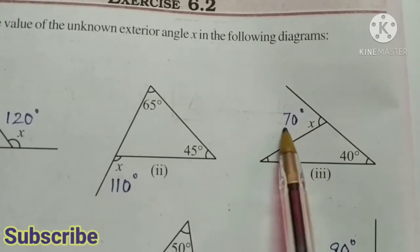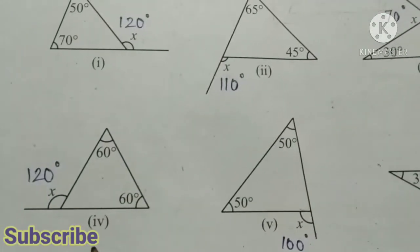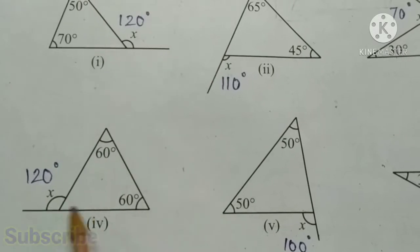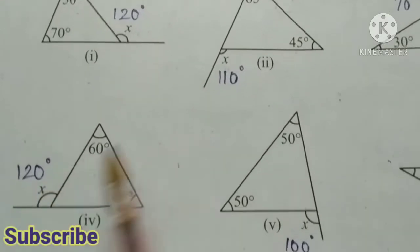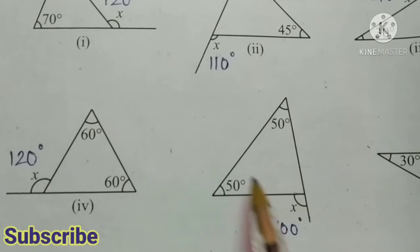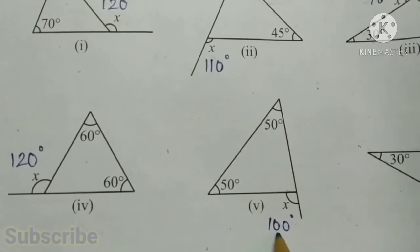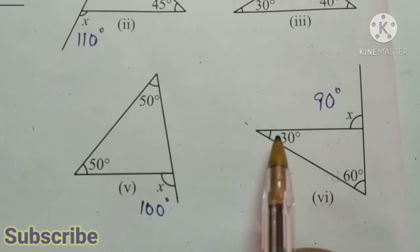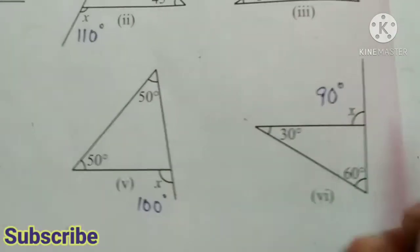Fourth part: 60 plus 60 that is equal to 120 degrees. Fifth part: x is equal to 50 plus 50, that is 100 degrees. Last one: 30 plus 60, that is 90 degrees. We can see that this is a right angle.